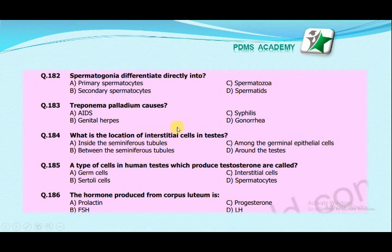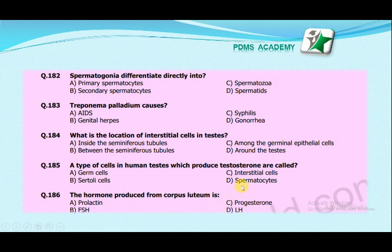Interstitial cells are present between the seminiferous tubules and help in production of testosterone. The type of cells in the human testis which produce testosterone are called: germ cells, Sertoli cells, interstitial cells, or spermatocytes? The correct answer is interstitial cells. The hormone produced from the corpus luteum is: prolactin, FSH, progesterone, or LH? The correct answer is progesterone, which is the hormone produced from the corpus luteum.